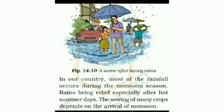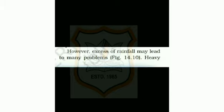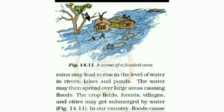In our country, most of the rainfall occurs during the monsoon season. Rains bring relief especially after hot summer days. The sowing of many crops depends on the arrival of monsoon. However, excess of rainfall may lead to many problems — you can see figure 14.10, a scene after heavy rains. Heavy rains may lead to a rise in the level of water in rivers, lakes and ponds. The water may then spread over large areas causing floods.